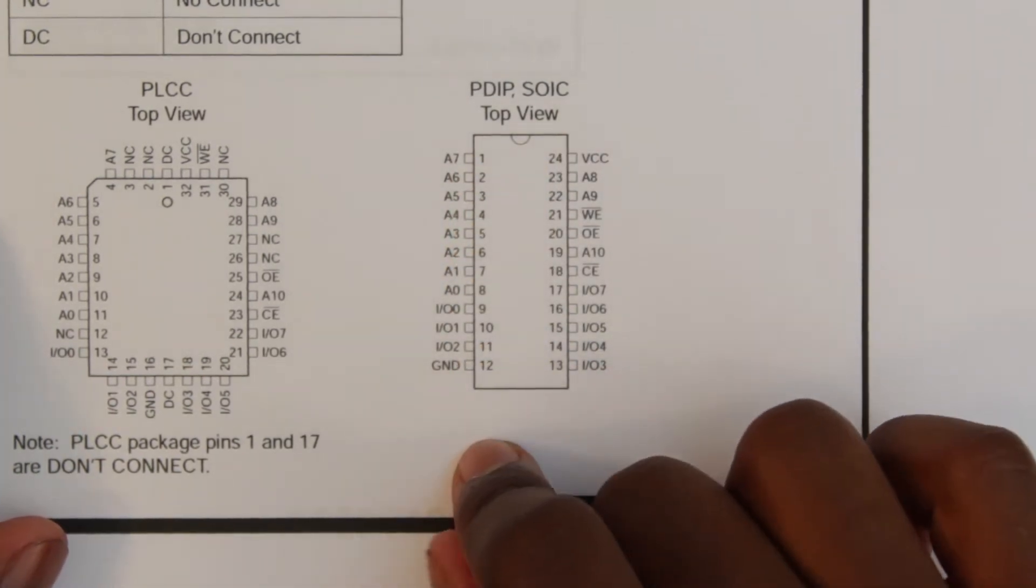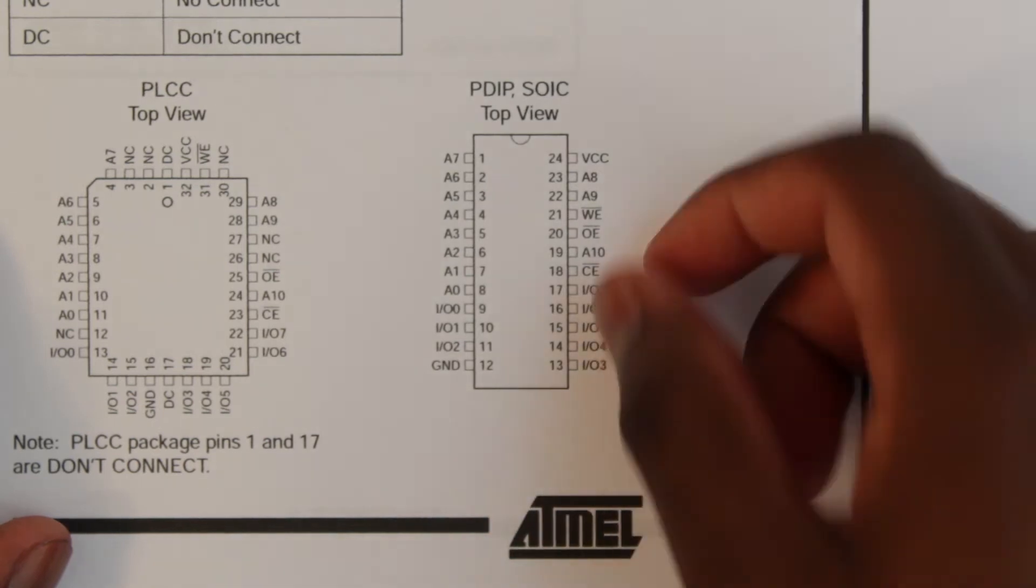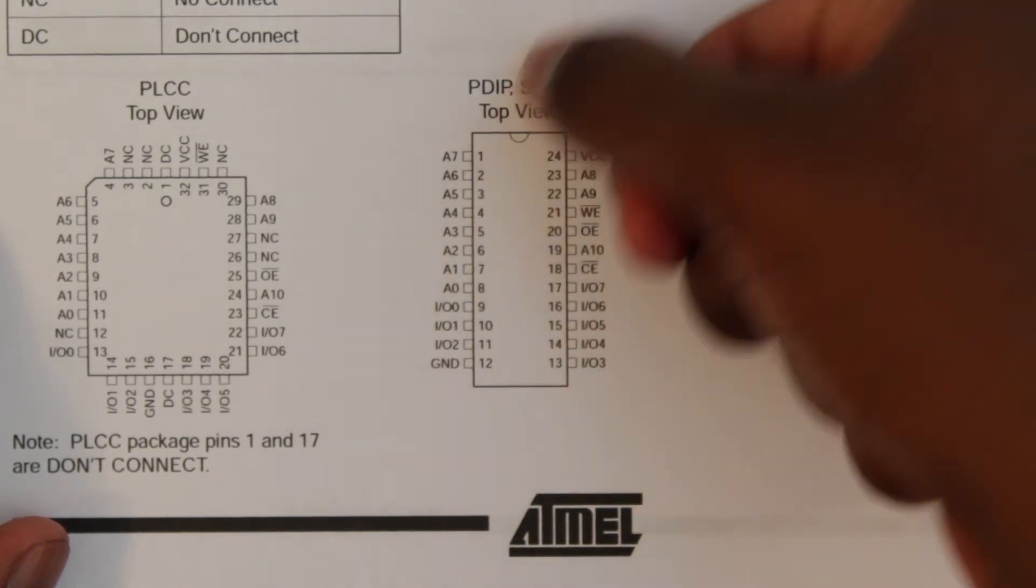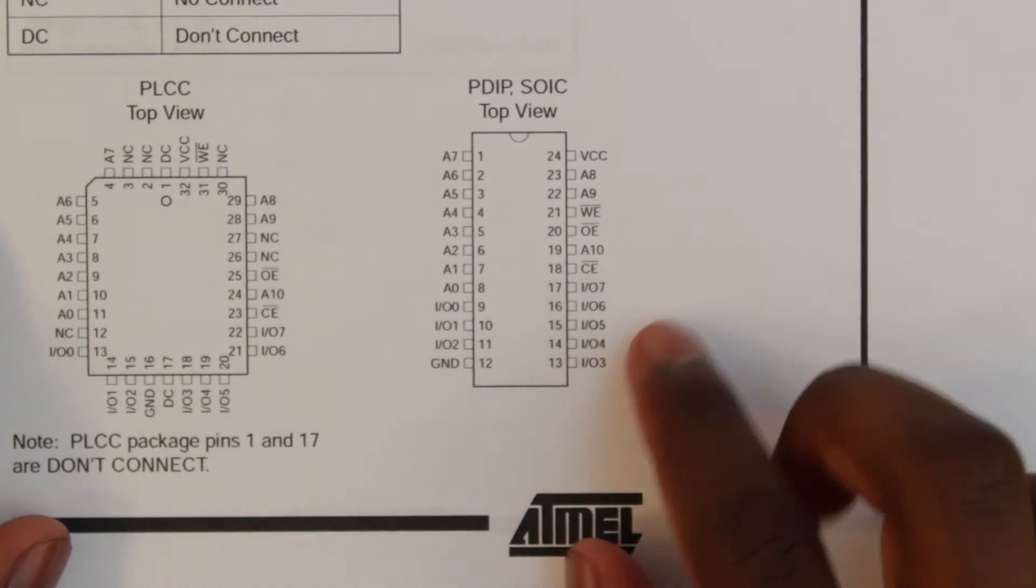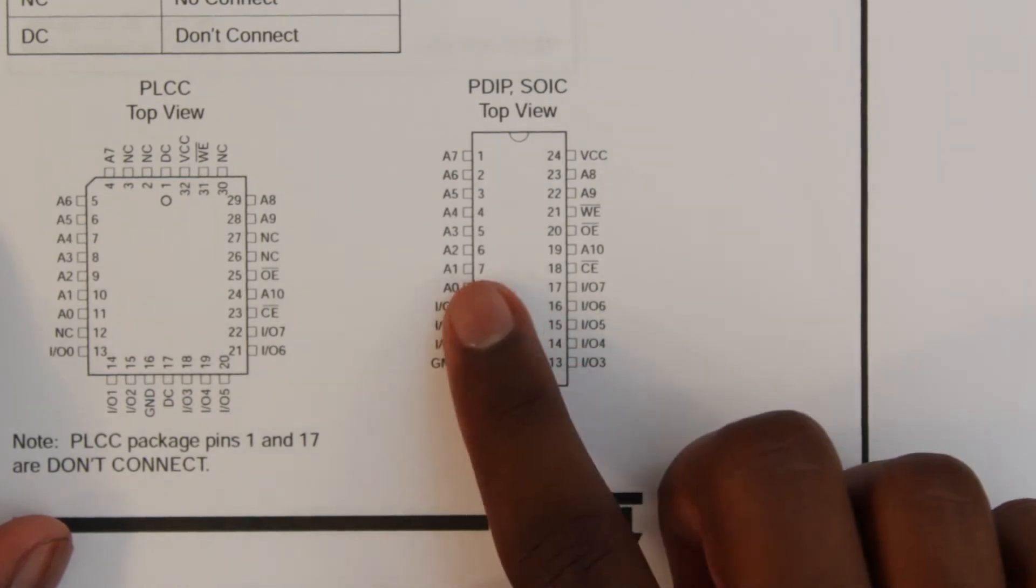By changing the output enable, we change whether these pins take in data or output data. The thinking is that these chips won't really be used dynamically. So you're programming it all at one time and read from it all at one time after that.